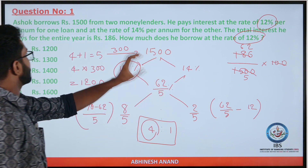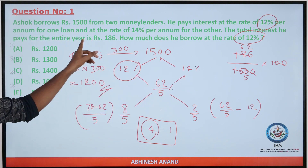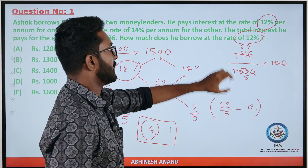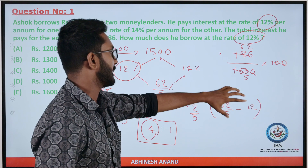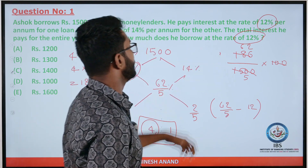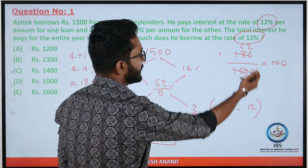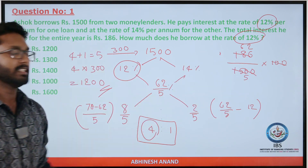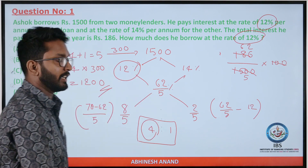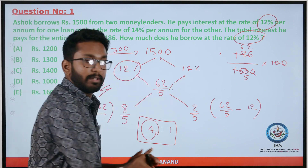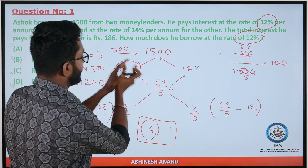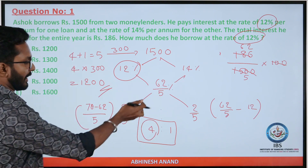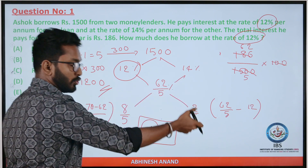The total interest is Rs. 186. That means the total interest rate is 186 divided by 5.5 into 100, giving 62 by 5. The corresponding ratio comes out as 8 by 5 and 2 by 5.